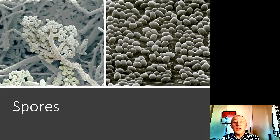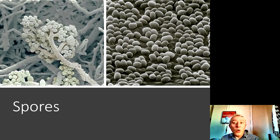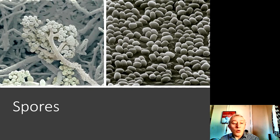In the previous video we looked at bacterial spores. Here on the right hand side is an image of Bacillus spores, and on the left hand side is an electron micrograph of a filamentous fungus — in this case Aspergillus. You can see the long woven strands of hyphae and the spores on the top.